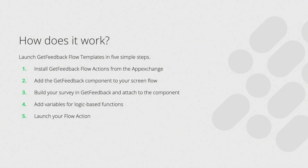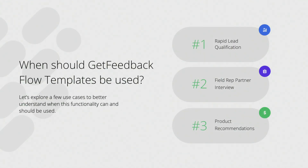First up, we're going to talk about lead qualification. Admins, how many times do you hear your sales reps complain about too many fields on your lead or opportunity objects? What if you could create a single button that launches a survey and gives you the ability to just tap on some options, with skip logic routing you down different pathways, and on the back end, the systems are automatically updating that lead in an appropriate way based on what you're learning about that particular prospect? We're going to show you how to automate that whole process.